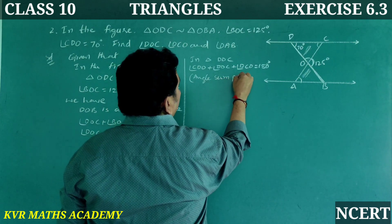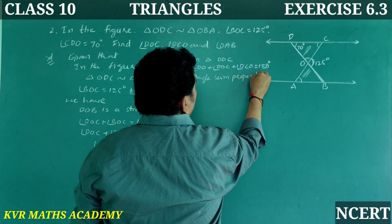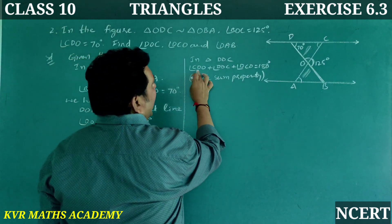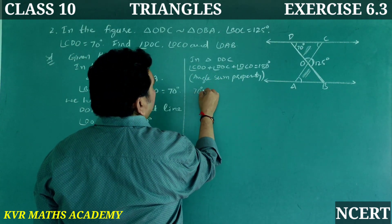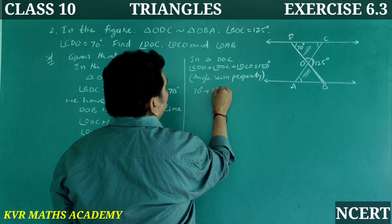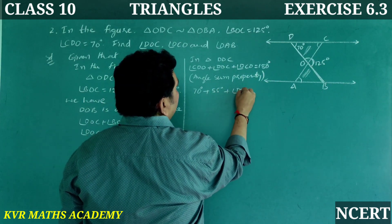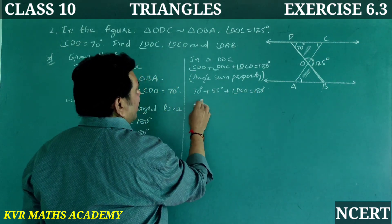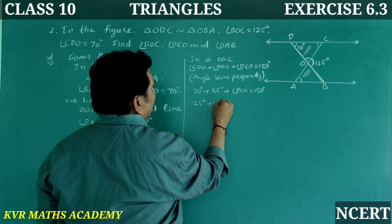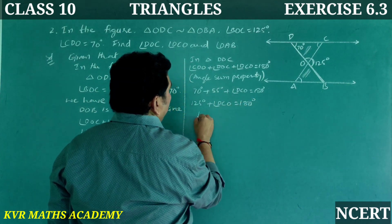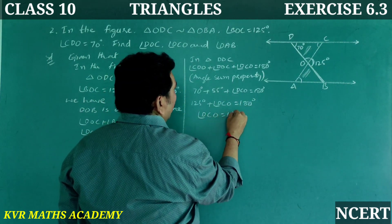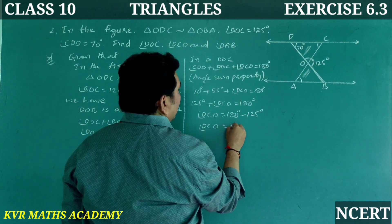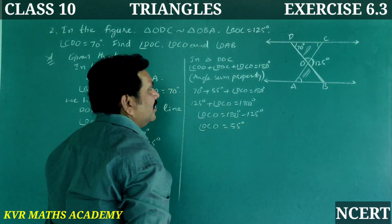Next, to find angle DCO, we use the angle sum property - the sum of angles in a triangle is 180 degrees. So angle CDO plus angle DOC plus angle DCO equals 180 degrees. That gives us 70 plus 55 plus angle DCO equals 180 degrees. Therefore 125 plus angle DCO equals 180, so angle DCO equals 55 degrees.